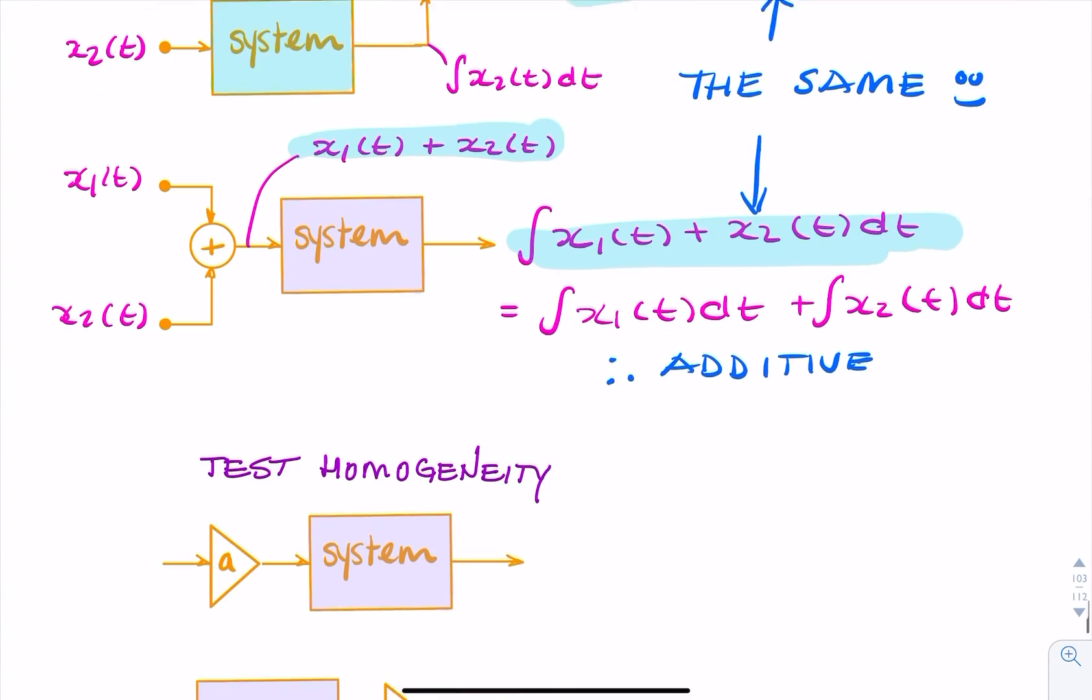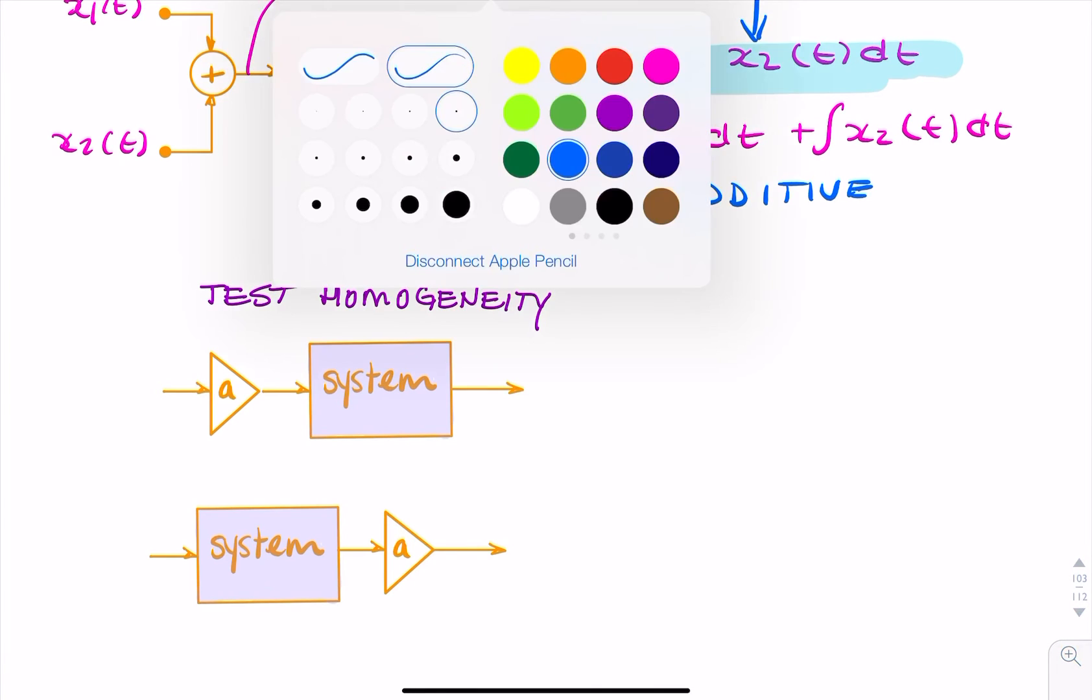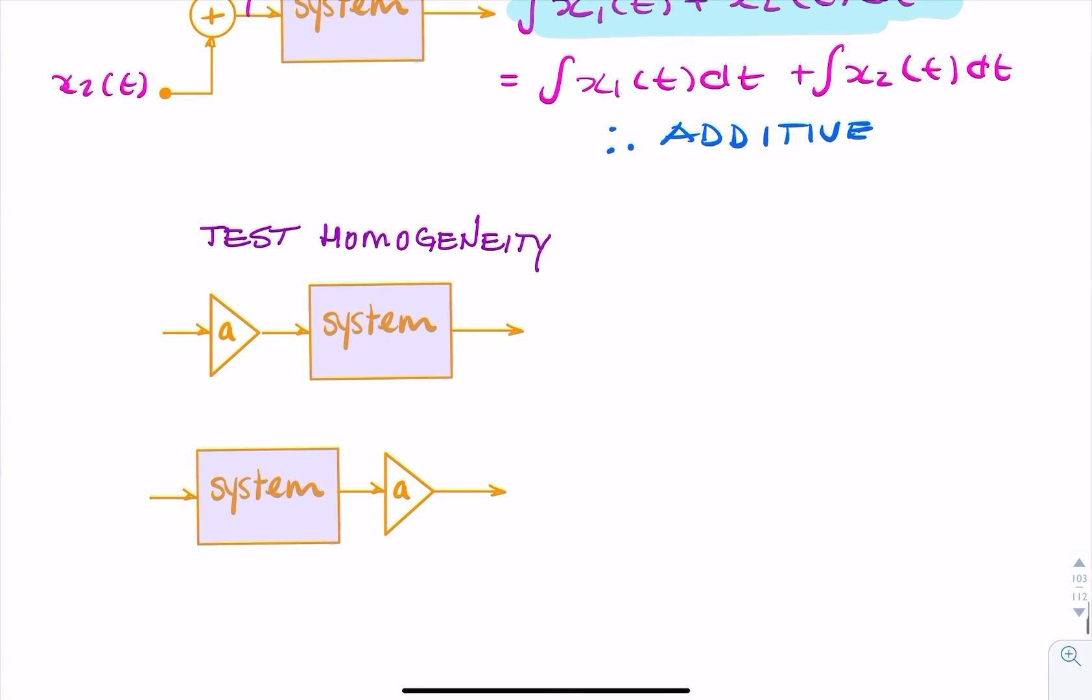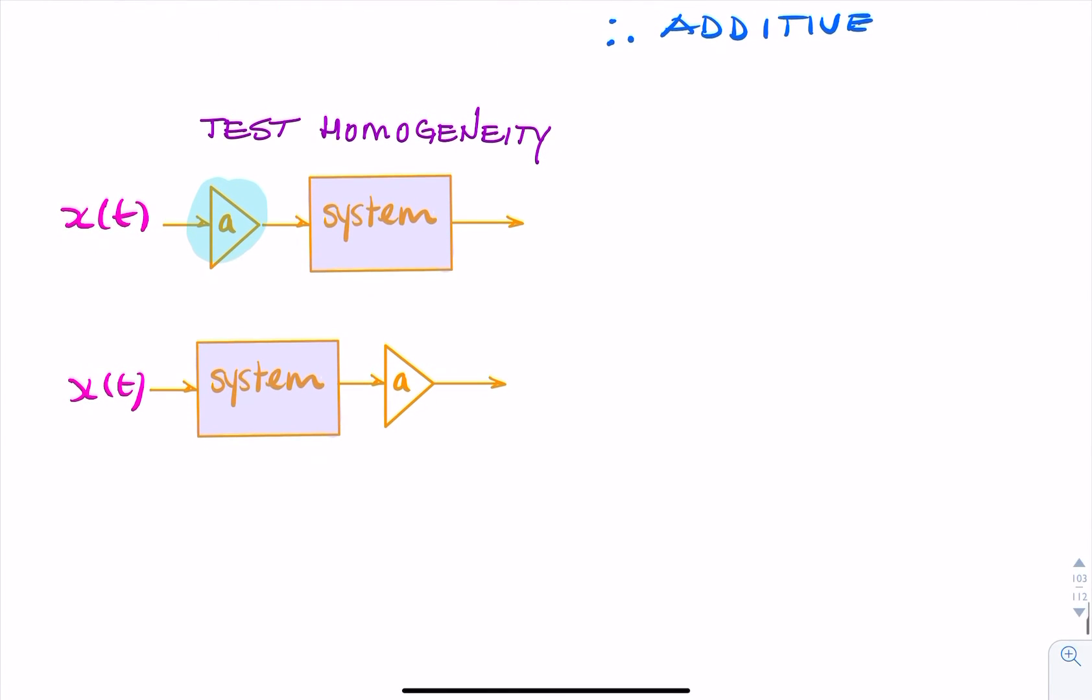Now we test if it's homogenous. This is an easier test. So the test of homogeneity, we simply feed our system with x of t twice. Once we multiply it by some constant, we scale it before the system and once we do it after the system.